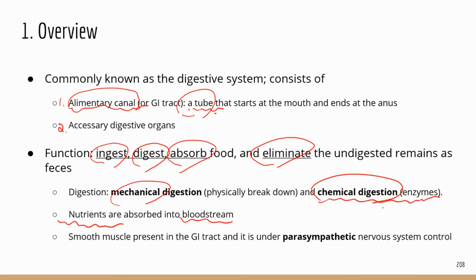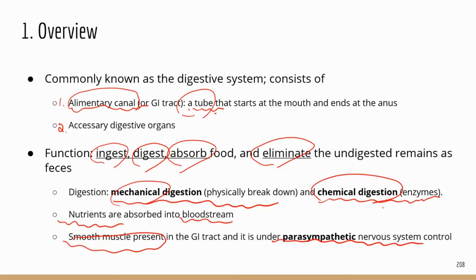In your GI tract there is a lot of smooth muscle, because mechanical digestion requires physical force and the tract needs movement to push food along. All of that force is generated by smooth muscle. The smooth muscle in the GI tract is under parasympathetic nervous system control. If you remember from the nervous system, there are two divisions: parasympathetic and sympathetic, and these two systems do the opposite things.